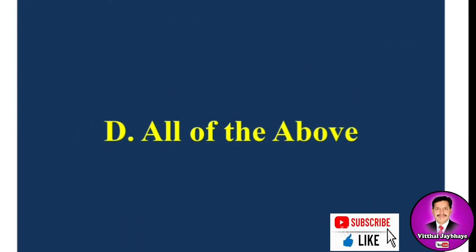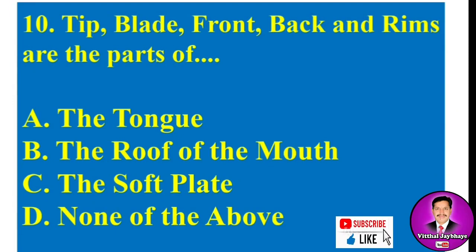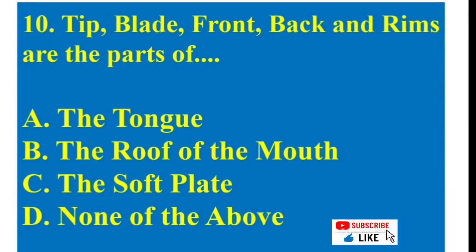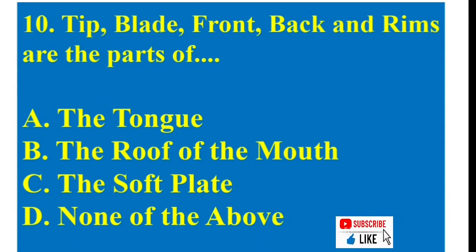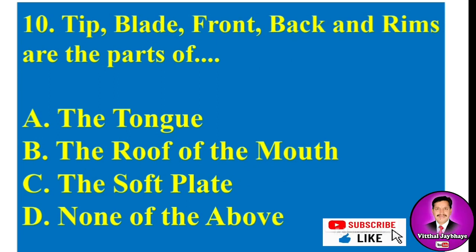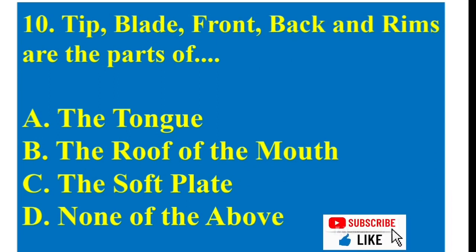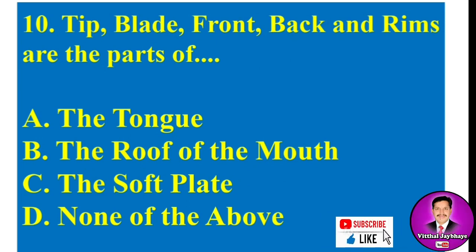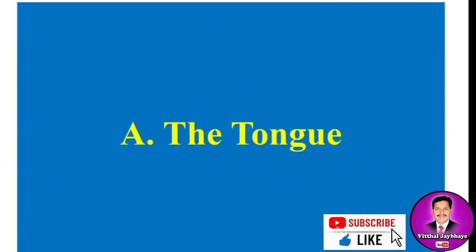MCQ number ten: Tip, blade, front, back, and root are the parts of — A) the tongue, B) the roof of the mouth, C) the soft palate, D) none of the above. The correct answer is A — the tongue.